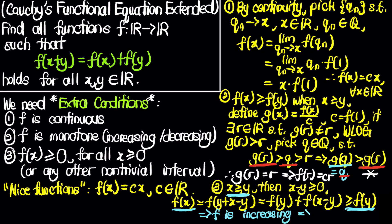This reduces to the second case. So we have covered all three extra conditions. In summary, for any functional equation problem where f satisfies additivity, if any one of these three conditions — continuity, monotonicity, or non-negativity on non-negative inputs — is given or can be proven, then f(x) = cx is the only solution.